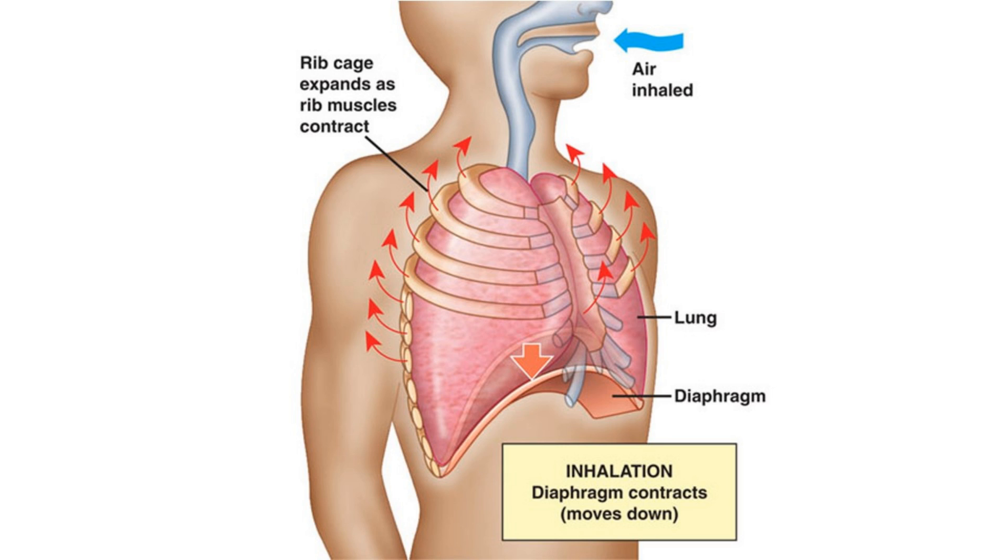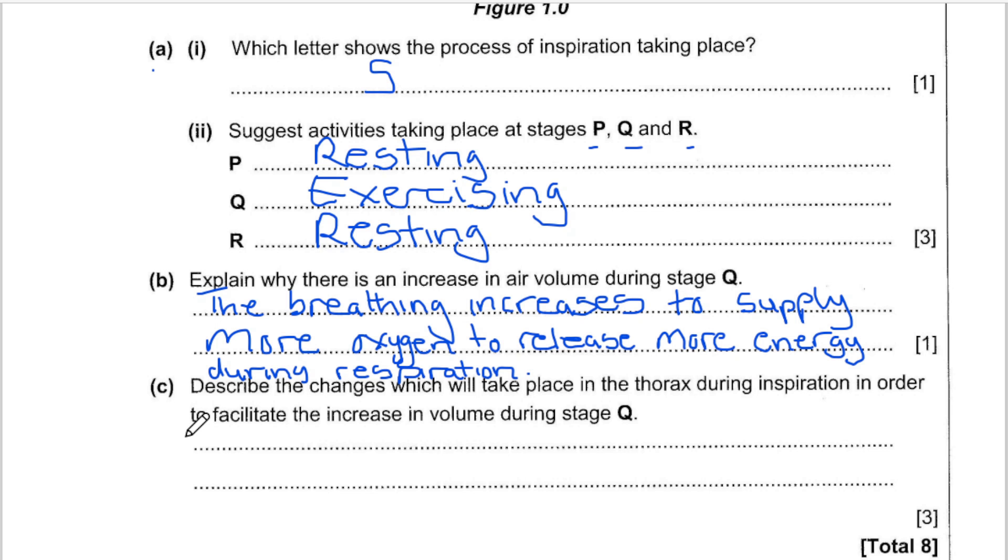Then, the diaphragm will also contract and flatten, so this will then reduce air pressure in the thoracic cavity, allowing more air to enter.